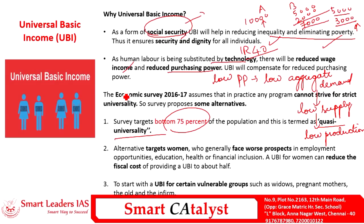There are few alternatives suggested by developmental economists. One argument disfavoring UBI is that it induces more gender disparity in family income, since patriarchal family setups place expenditure control with the senior male member. The alternative proposed is to provide UBI by targeting women of the family, since women face worse prospects in job opportunities, education, health, and financial inclusion. A pilot project indicates that UBI for women can also reduce the fiscal cost of providing UBI itself.